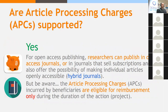Another question that researchers and project coordinators frequently have about EC compliance relates to costs and Article Processing Charges (APCs). The costs associated with APCs are covered under the Horizon 2020 open access policy, so researchers can publish in open access journals or subscription-based journals. You should budget for these costs. Those costs are part of the project budget associated with dissemination and are eligible for reimbursement. However, the costs are eligible only during the duration of the action.